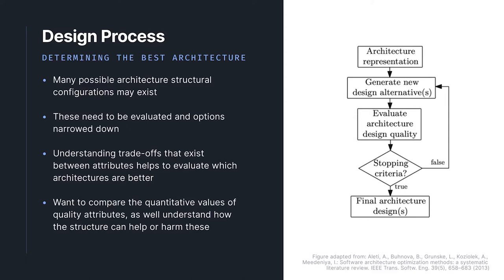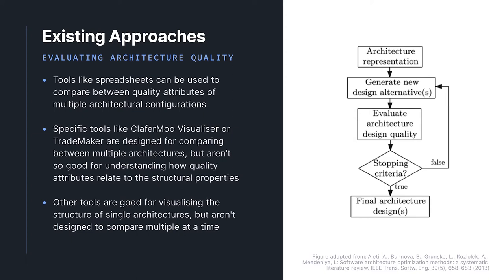Within an architectural design process, once possible architectural designs have been identified, the architect needs to evaluate the quality of each and decide whether an architecture is good enough to keep considering. This set of architectural designs and the quantified values of their attributes feed into the next evaluation phases. The flow diagram on the right shows an outline of this process. The section we're focusing on for this tool is the evaluation and stopping criteria part in the middle. The aim is to find the best architectural options by understanding the quality attributes and trade-offs, typically done using spreadsheets or multi-objective optimization tools alongside separate structure evaluation tools.